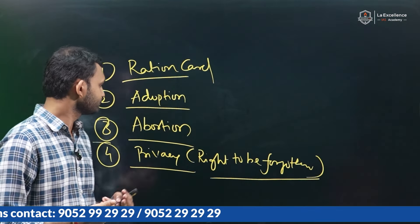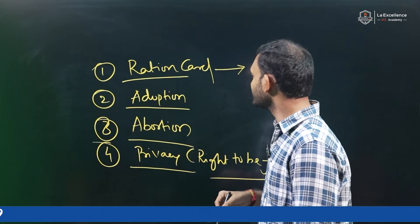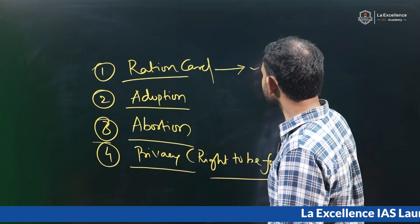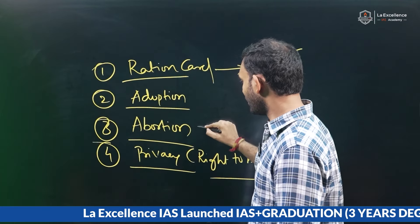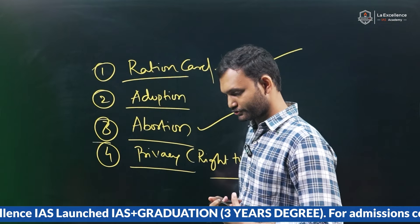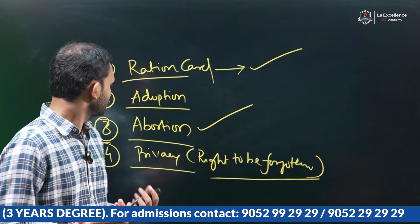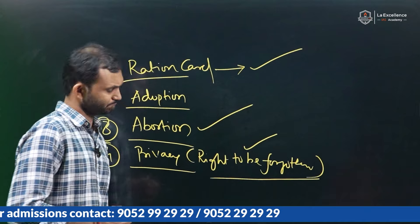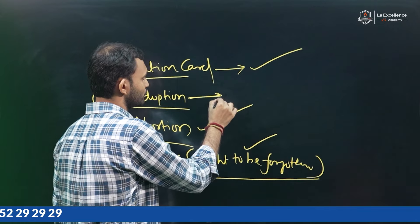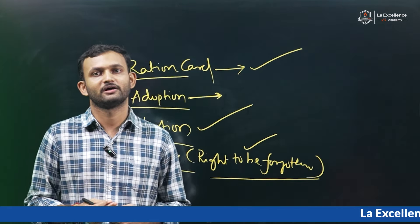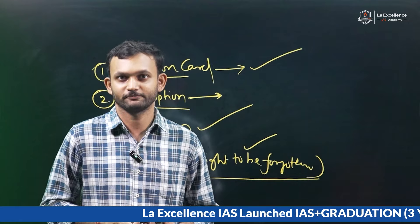If you've followed the whole video, it might be easy to decipher which right would not be conferred. Just pause for a while and try to answer for yourselves. So, since this is just a civil union and doesn't need formation of a family, the ration card has been conferred in progressive judgments. Abortion rights are being given to those who might have been raped or were victims of contraceptive failure. Even the right to be forgotten as part of privacy has been granted. The only thing not being granted is adoption.